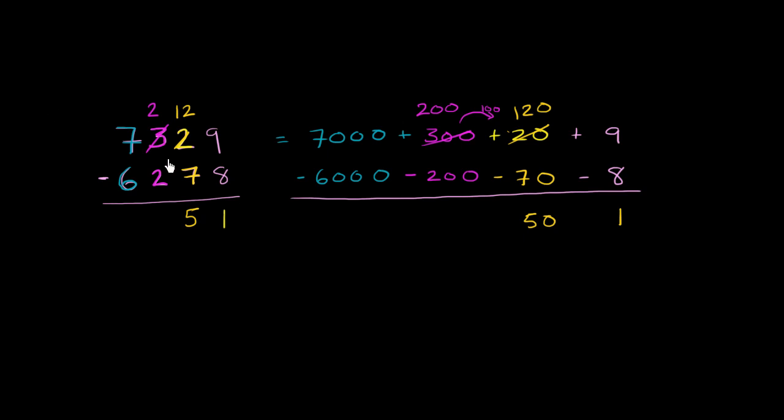And then we can go the other places. You say 2 minus 2, that's 0 hundreds. And then 7,000 minus 6,000 is 1,000. And once again, right over here, 200 minus 200 is 0 hundreds. And then 7,000 minus 6,000 is 1,000. So this is going to be 1,000 plus 0 plus 50 plus 1, which is the exact same thing as 1,051.